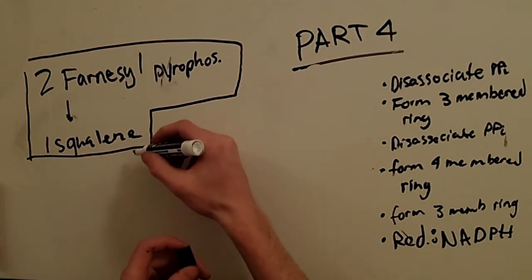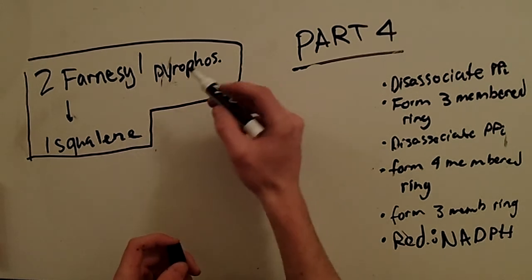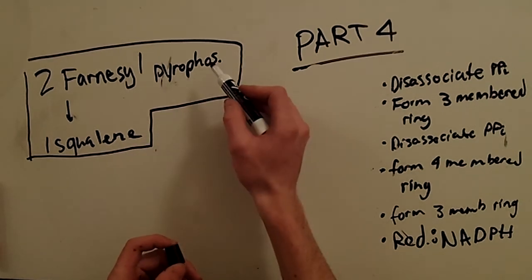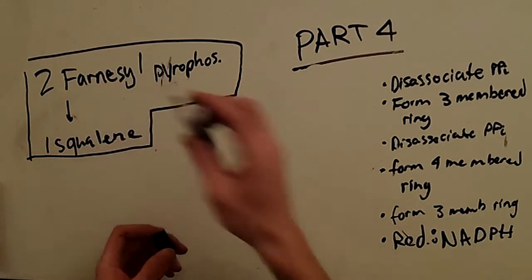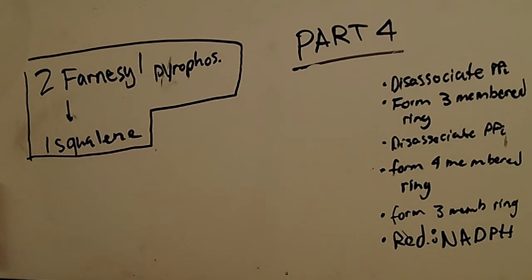Now squalene is a 30 carbon compound and that makes sense because the farnesyl pyrophosphate was 15. And this is done conveniently by an enzyme called squalene synthase.